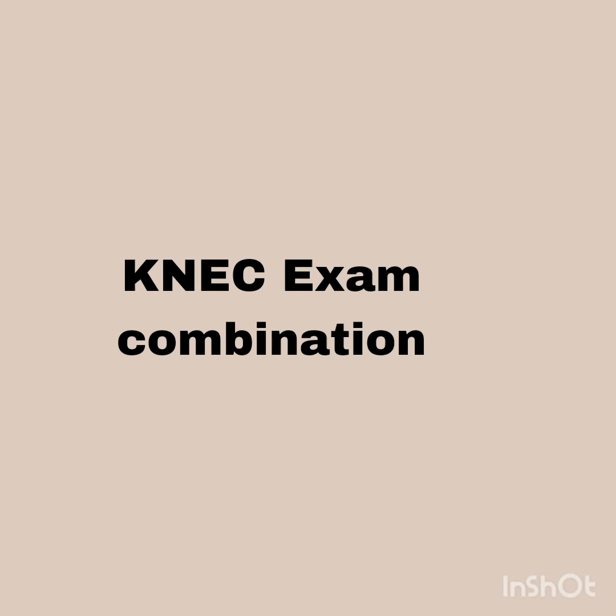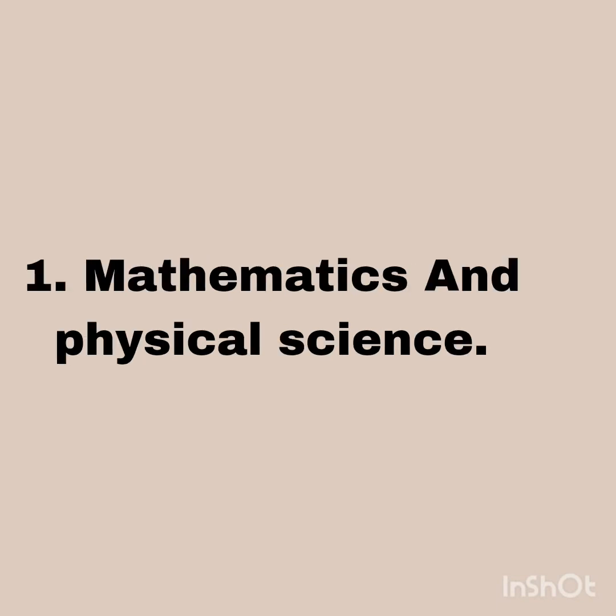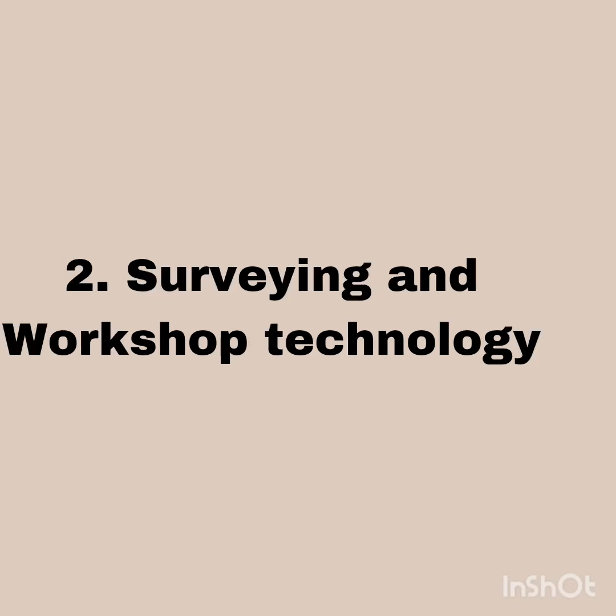Paper one will have a combination of mathematics and physical science. Here you're expected to answer five questions: two questions from the mathematics side, two questions from the physical science side, and then one question where you either choose mathematics or physical science.